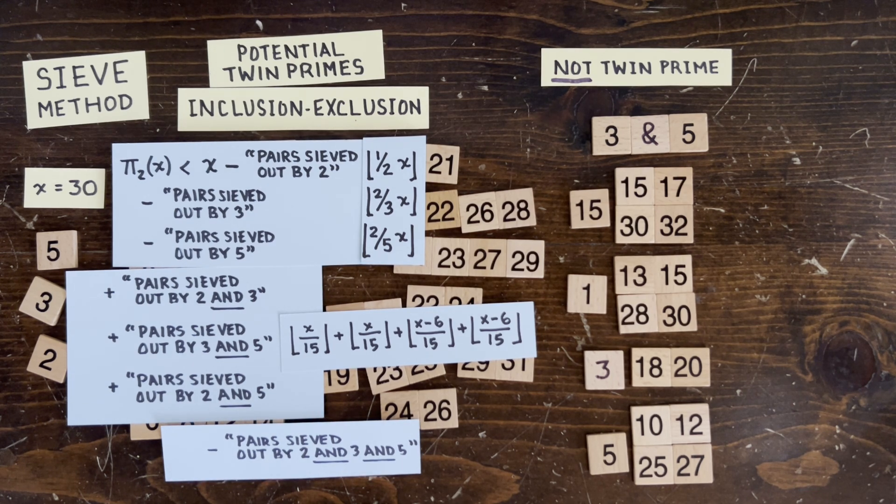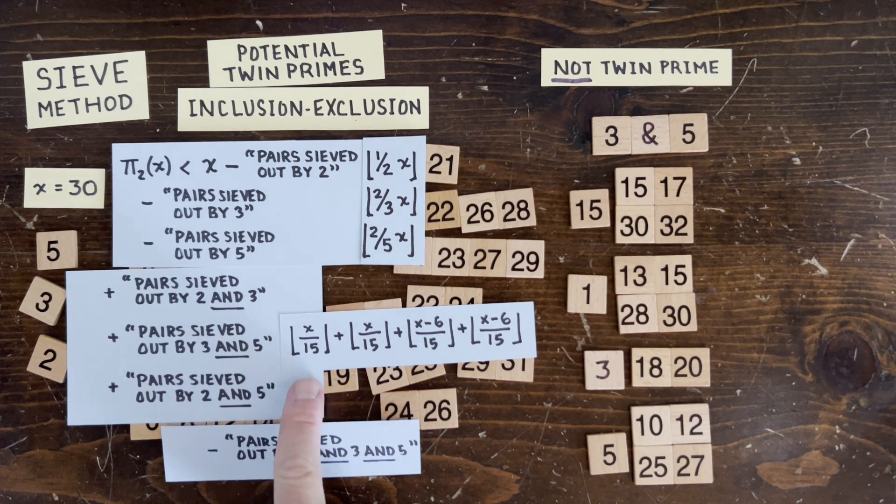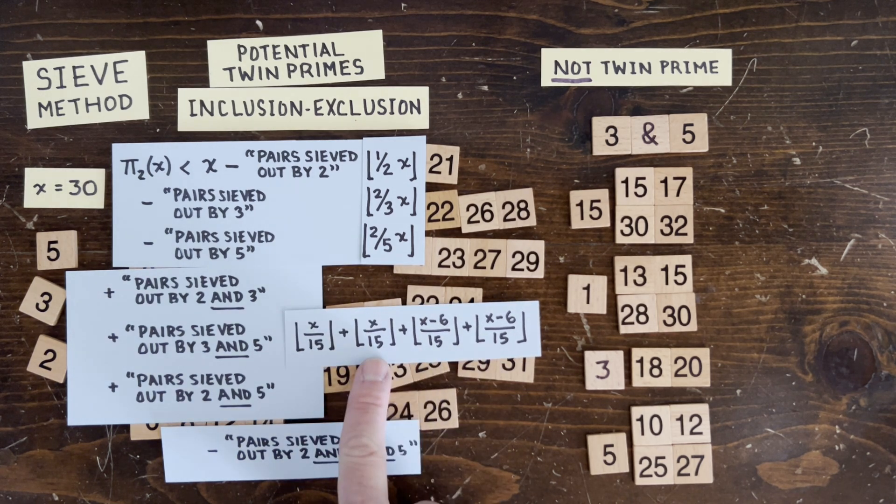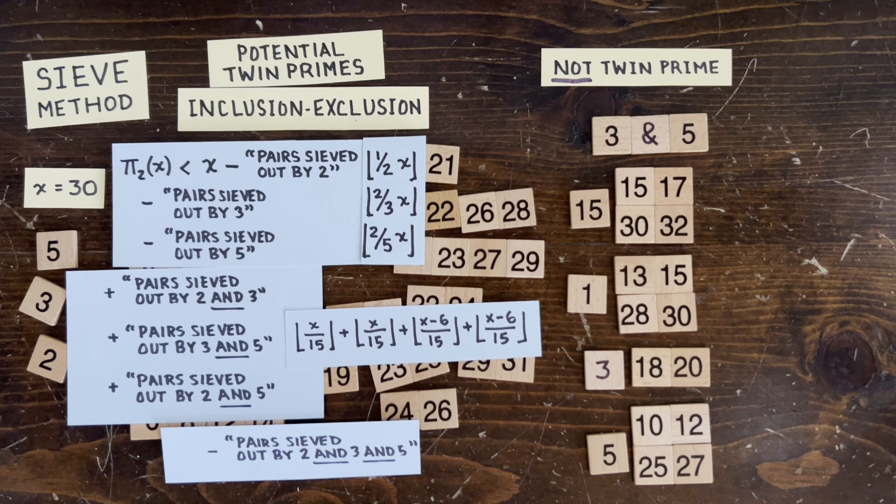So this inclusion-exclusion formula keeps expanding every time we add a new prime to our sieve. Imagine once we get to sieving with 10 or 20 primes, we're going to have to deal with all the different ways that the products of those primes can sieve stuff out. So there's going to be a ton of terms and a ton of floor symbols to worry about. So Viggo Brun needs to come up with some first class ideas, which he does.